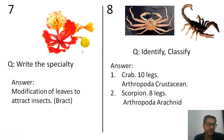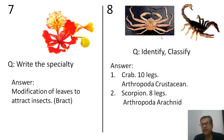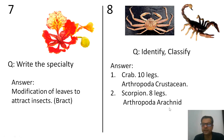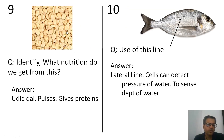A gulmohar flower was kept — write the speciality. The answer is modification of leaves to attract insects; this work is normally done by petals but here leaves are doing it — it is a bract. Next, two animals were kept: crab and scorpion — identify and classify. Both appear to have 10 appendages, but in the case of scorpion, two of them are not legs — they are modifications of mouth parts. So crab has 10 legs: Arthropoda, Crustacea. Scorpion has 8 legs: Arthropoda, Arachnida. A dal sample was kept — answer is it is a pulse giving proteins. A fish was kept with an arrow pointing to a line — it is the lateral line; cells can detect water pressure and it is used to sense the depth at which the fish is swimming.